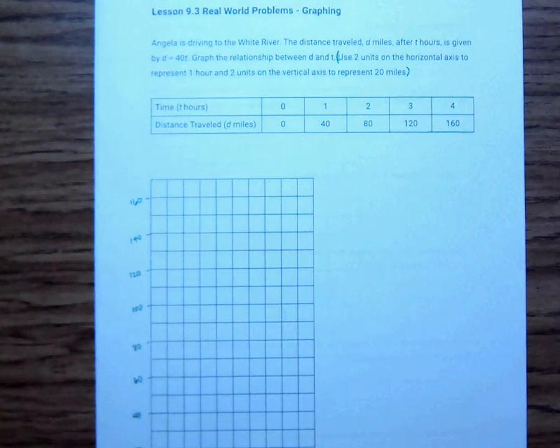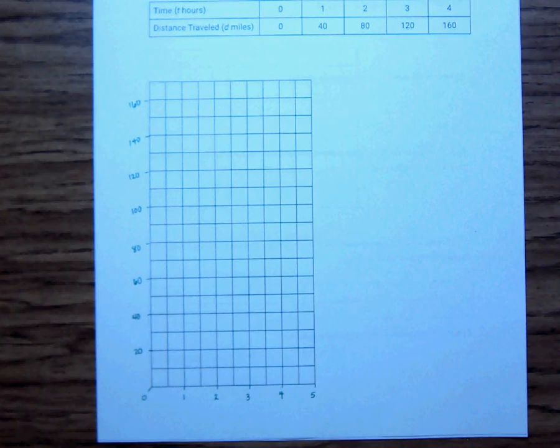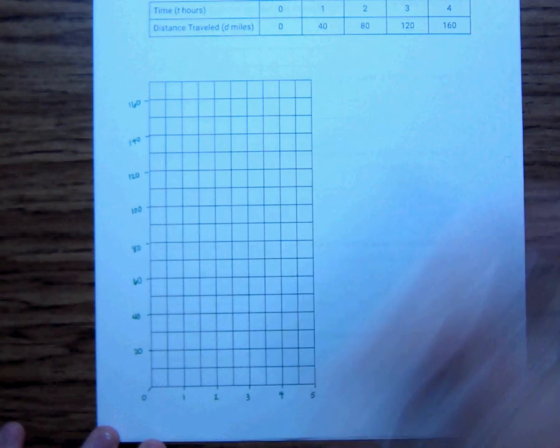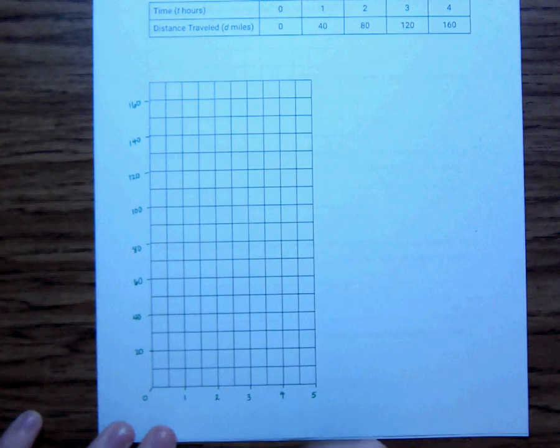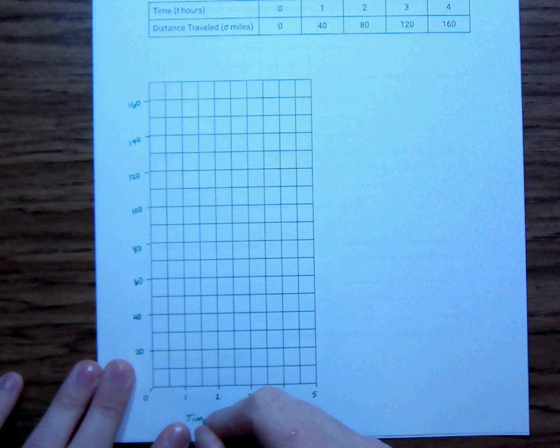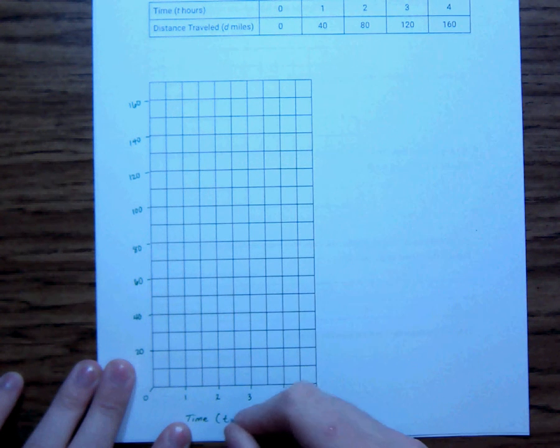Alright, so I've labeled my axis, axes with my numbers. I still want to label them themselves. So this, the left and right, is T, and that is time. So time, and T, hours.